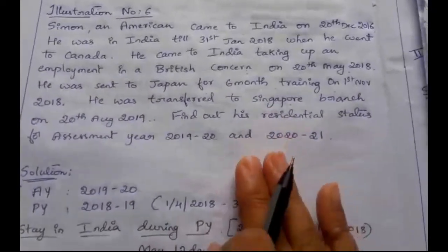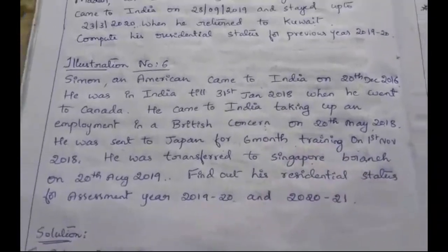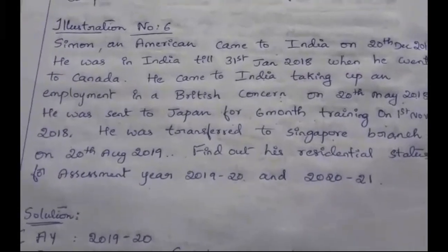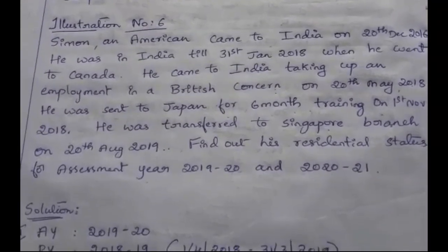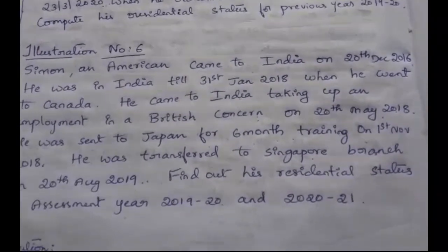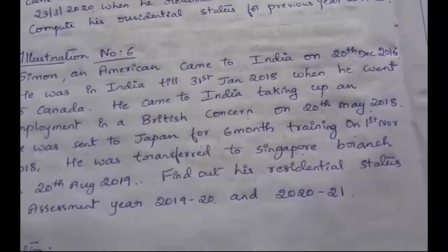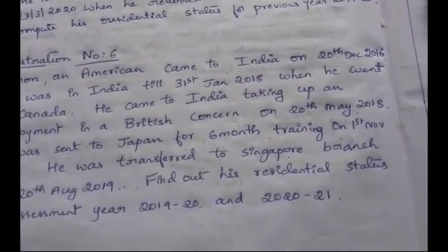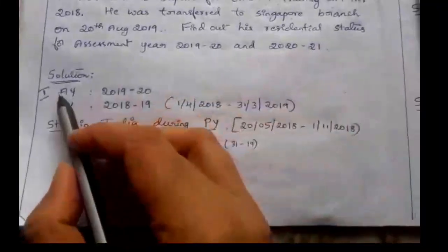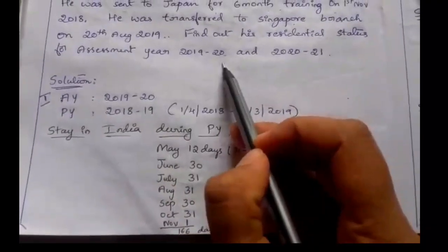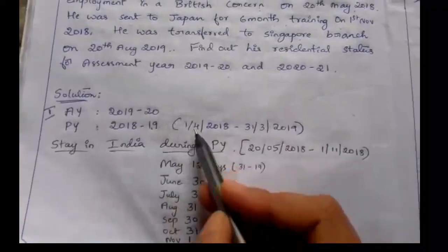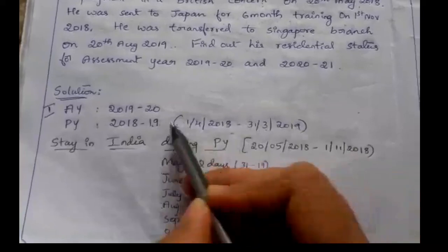Since he is an American citizen, the exceptional rule is not applicable. The exception applies only for an Indian citizen leaving India to abroad for employment - then he comes under the exceptional case. For an American citizen, if he leaves India for employment abroad, he must satisfy any one of the basic conditions. If he satisfies anyone, then he becomes a resident. If an Indian citizen goes for employment abroad, then he must stay in India for 182 days. Now we will solve the solution.